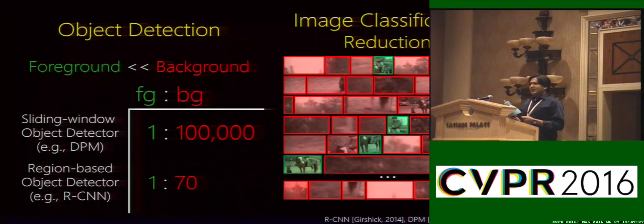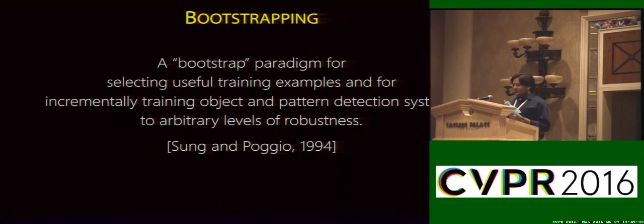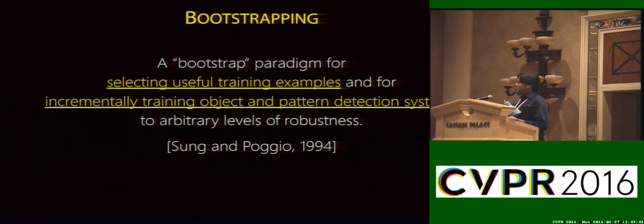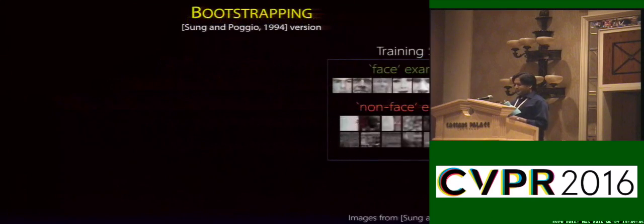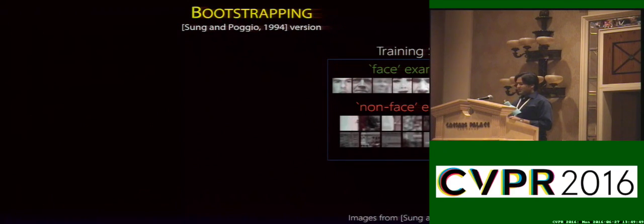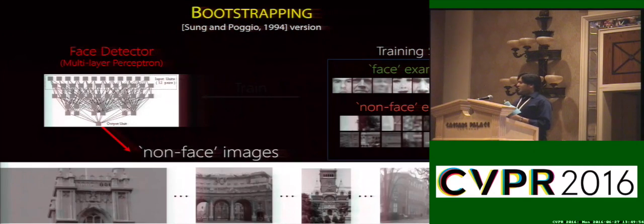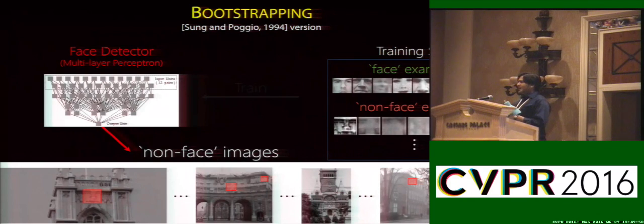Unsurprisingly, this is not a new problem and a standard solution has existed for at least 20 years called Bootstrapping, which is an algorithm to select hard examples for training object detectors. One of the first systems to use Bootstrapping was by Sung and Poggio. The algorithm was given a training set of face and non-face examples, trains a face detector, then uses this detector on non-face images to find false positives or hard negatives and add them to the negative set.